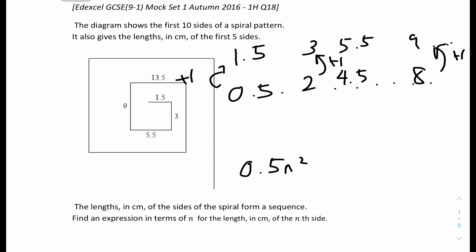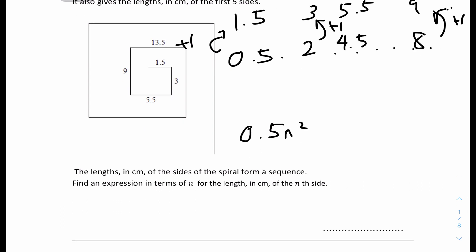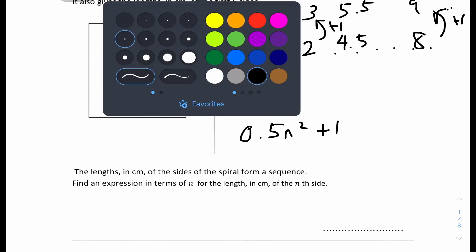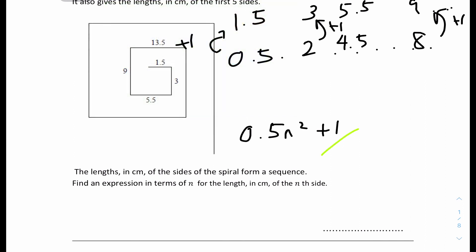Comparing 0.5n² to the sequence, there is a constant difference of +1 at every term. A constant term has no n, so the expression is 0.5n² + 1. That's the final answer: 0.5n² + 1.